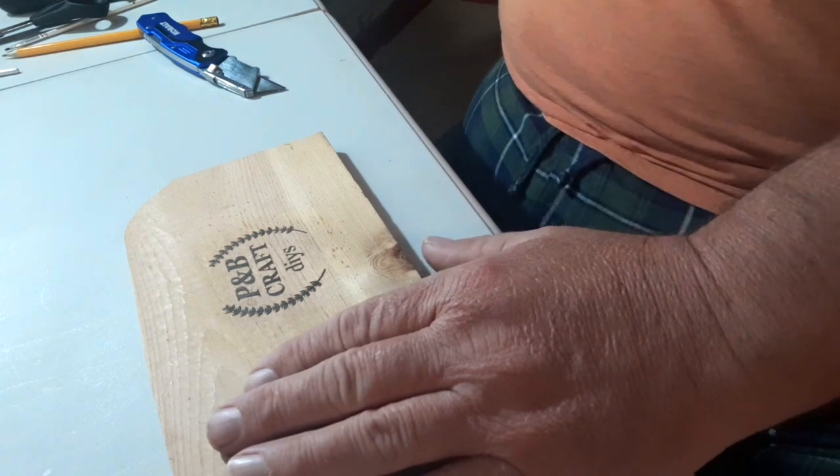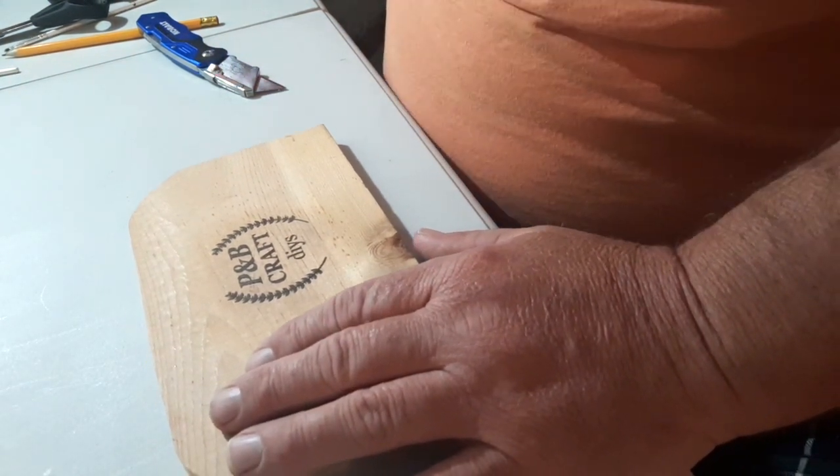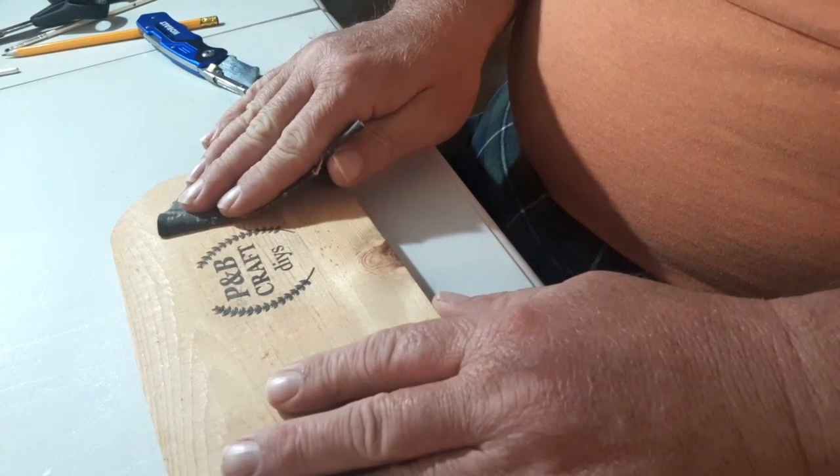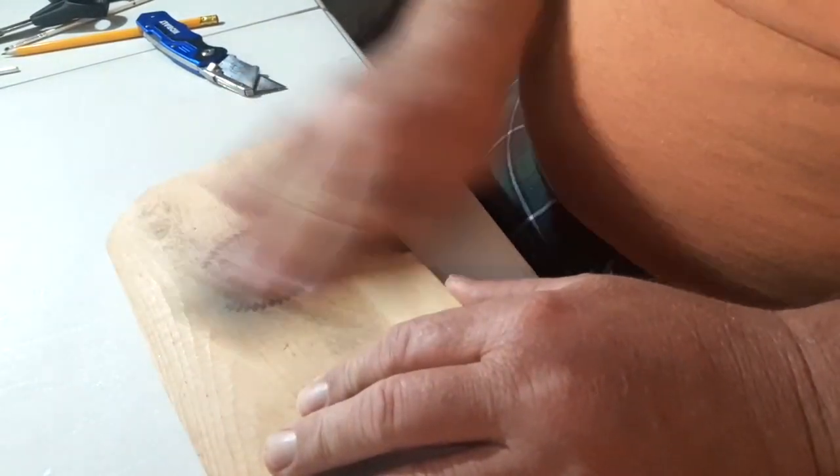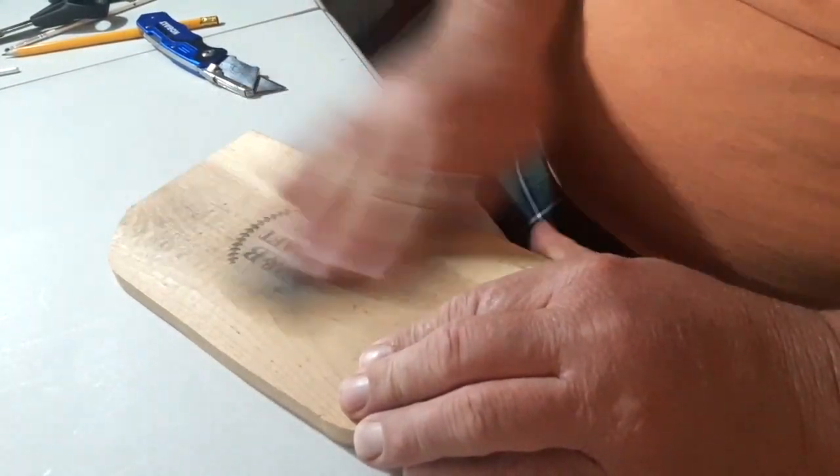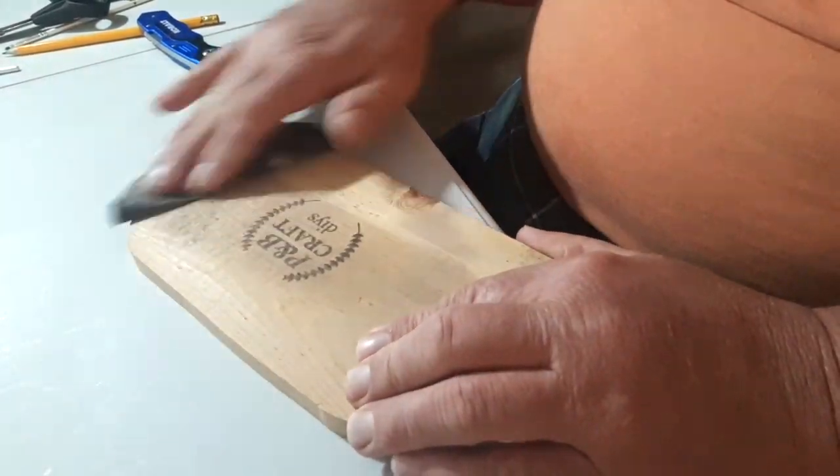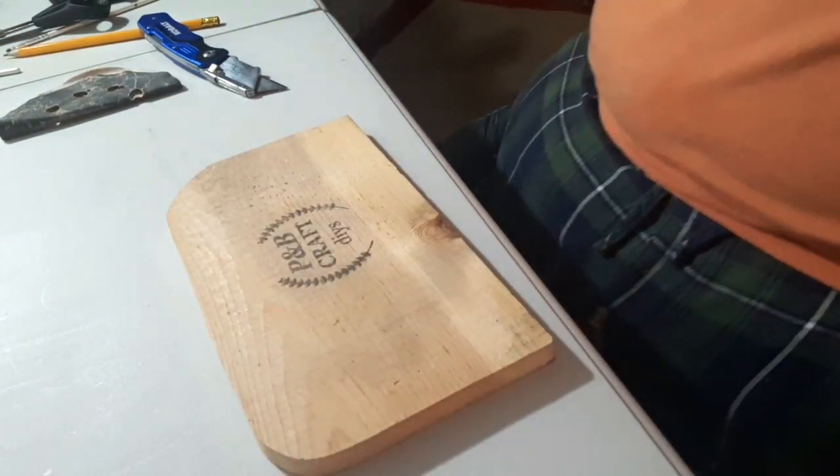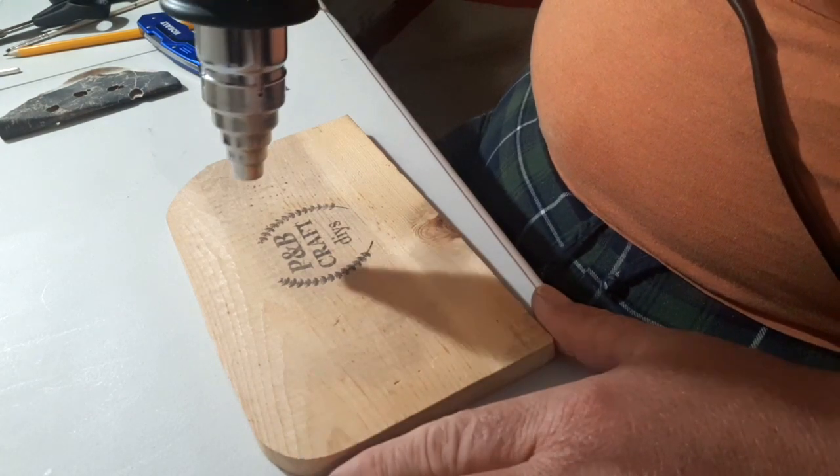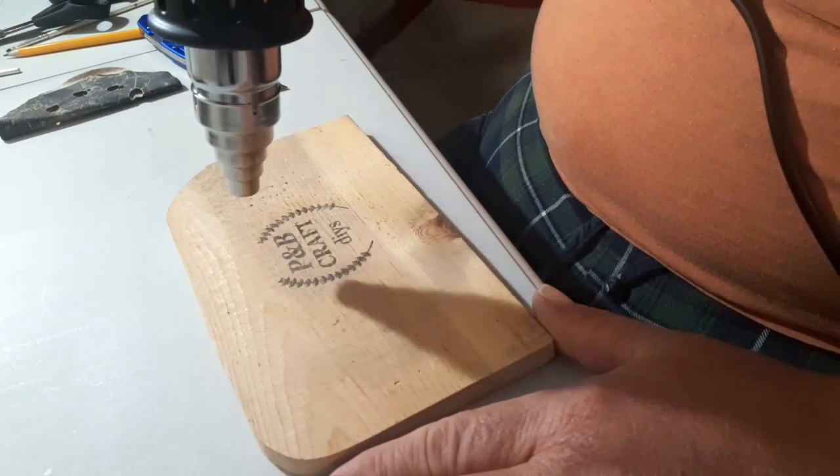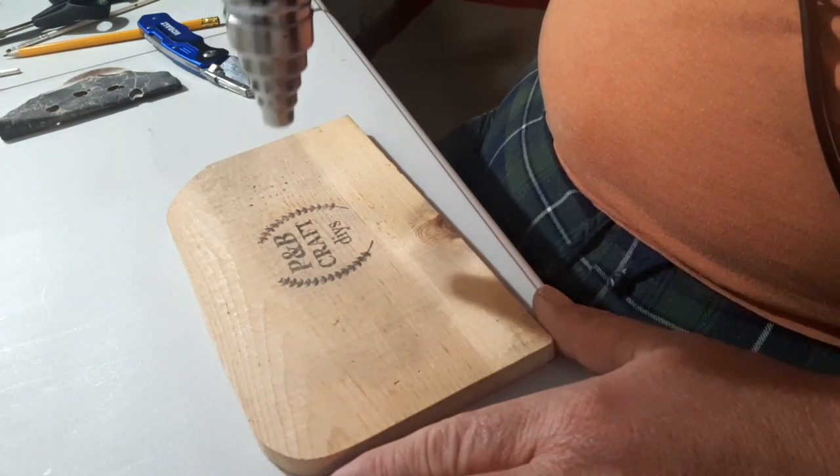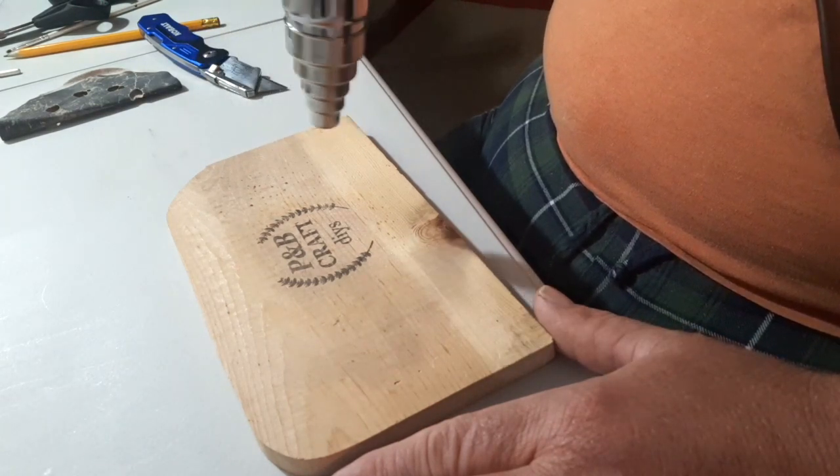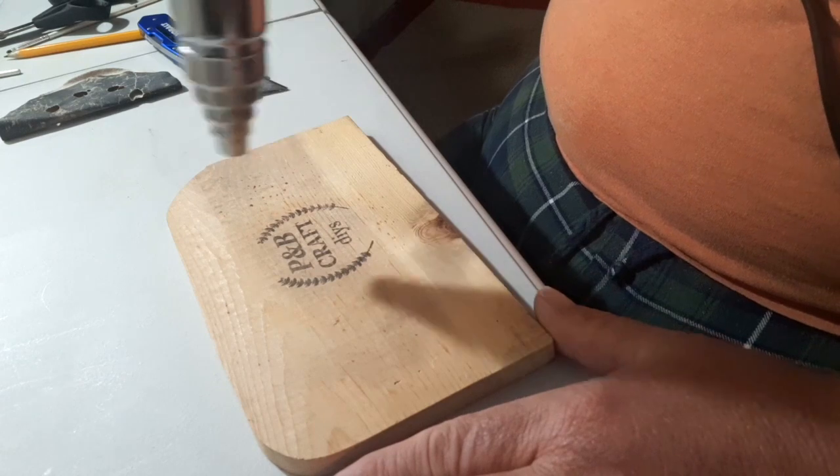So then what I do is I'm going to find my sandpaper here. I've just got an old piece of sandpaper. I think it's 320 grit. Just give it a little sanding. I'm going to put it in. It's a little bit dark in the smarts. I think I'm good at this.